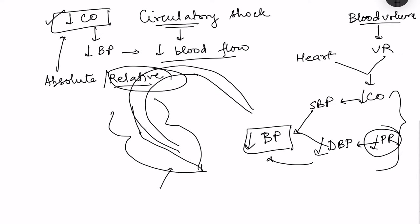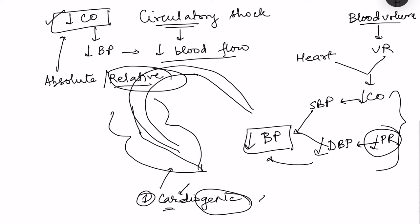So the causes of circulatory shock include: first, pumping failure of the heart, known as cardiogenic shock — the genesis of this shock is in the heart. Causes of cardiogenic shock can be myocardial infarction or arrhythmia, so proper pumping is not there.